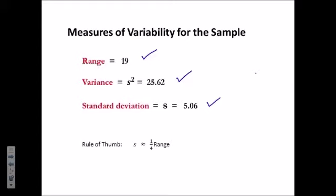There is a rule of thumb which says that the standard deviation is approximately a quarter of the range. Now this is only approximate. Let's see what happens in this case. The standard deviation was about 5. Is that one quarter of the range? The range was 19. Well, one quarter of 19 is 4.75. So the rule of thumb seems to verify our measures of variability.